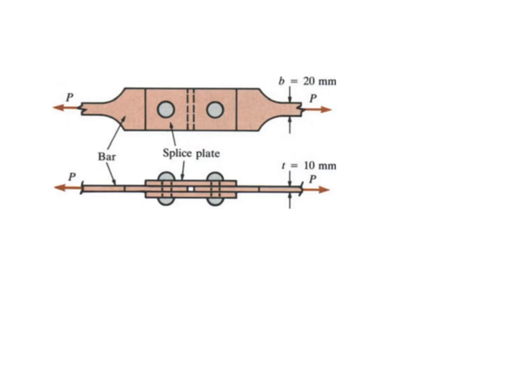Hi viewers, welcome back to yet another video in which we will be solving a problem from chapter one of the book Strength of Materials written by Timoshenko and Gere. In this particular problem we have two plates or bars and they are connected together using two splice plates.